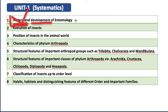Coming to the evolution of insects, you have to study the evolutionary history — whether insects have a monophyletic or polyphyletic origin, in which eon, era, and period insects developed, and how they evolved from their ancestors. Several theories have been given for the evolution of insects, so you have to mention those theories — what each theory states and who proposed it.